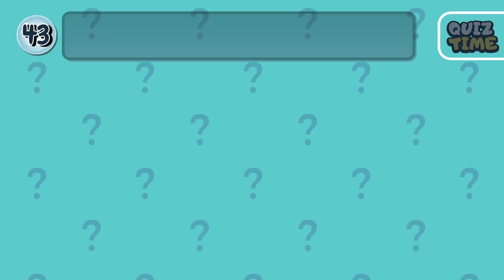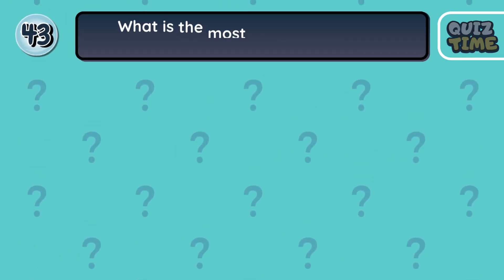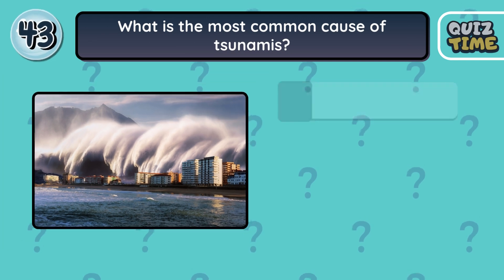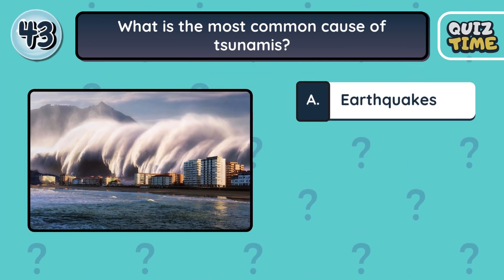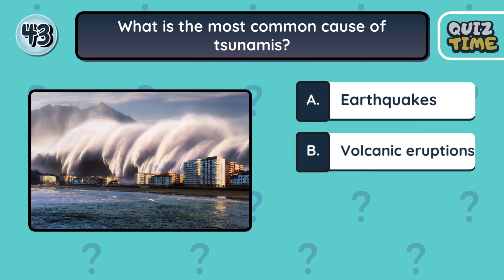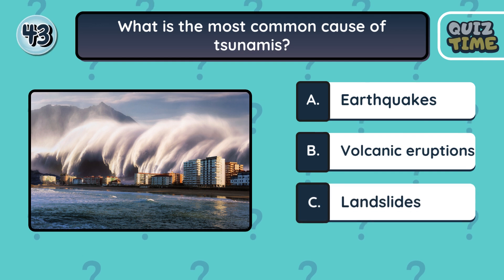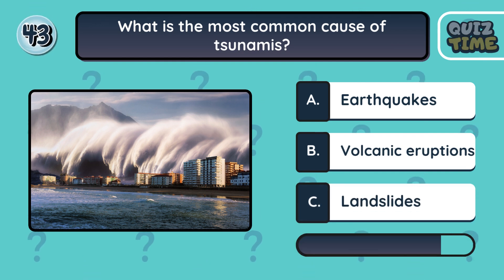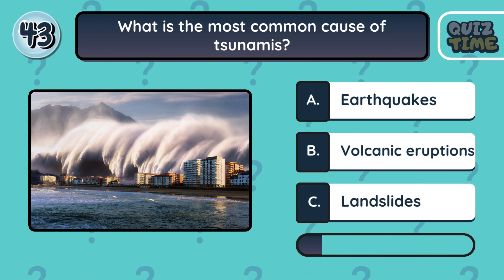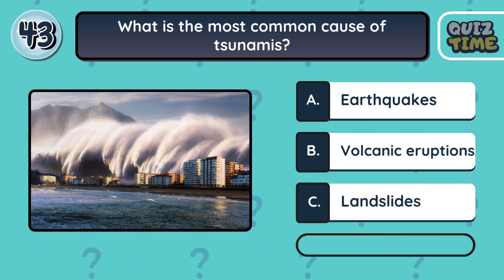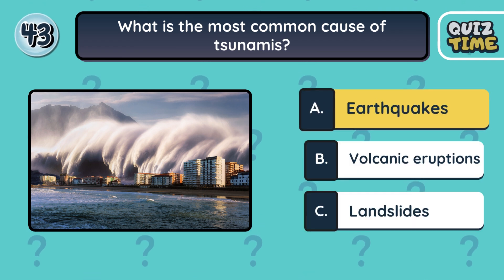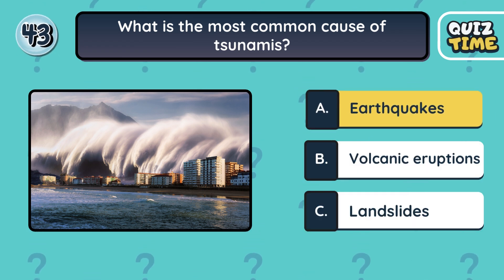Number 43. What is the most common cause of tsunamis? A. Earthquakes. B. Volcanic eruptions. C. Landslides. The correct answer is A. Earthquakes.